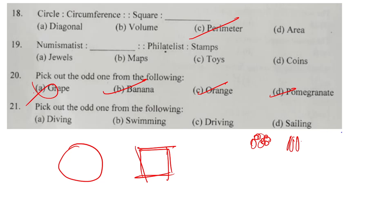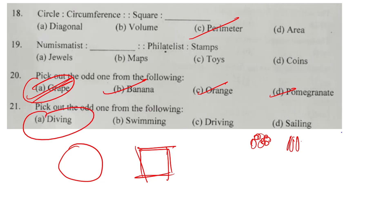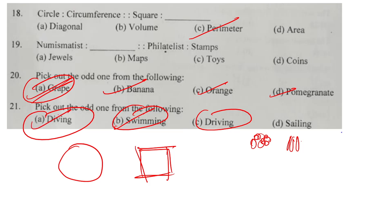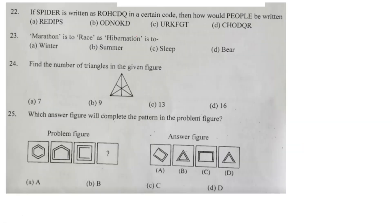The answer is confirmed. Question number 21: pick out the odd one — diving, swimming, driving, sailing. Swimming, diving, and sailing all relate to water — sea, river. Driving involves a motor vehicle, so driving is the odd one out.